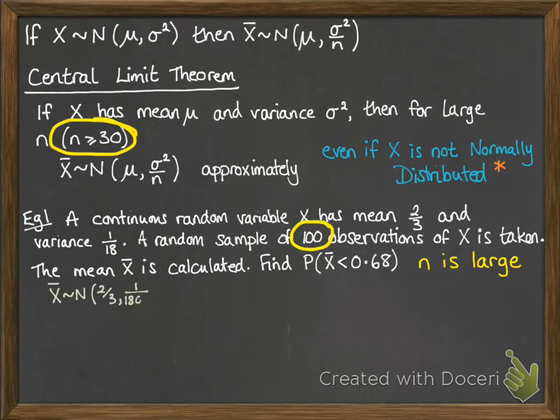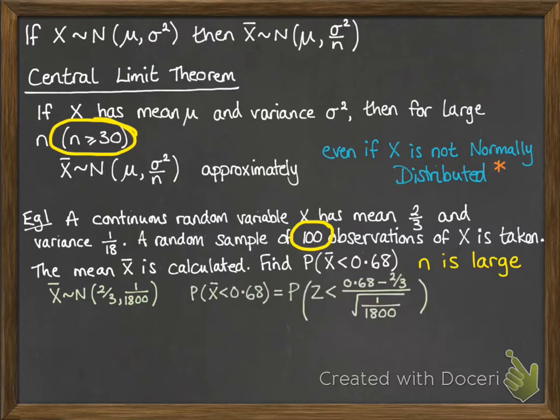Now our sample mean follows a normal distribution with mean 2/3, and the variance is 1/1800. That's 1/18 divided by n, the 100. So the probability that our sample mean is less than 0.68 looks like this. We're just using the normal distribution, and then we can work that through to find our probability.